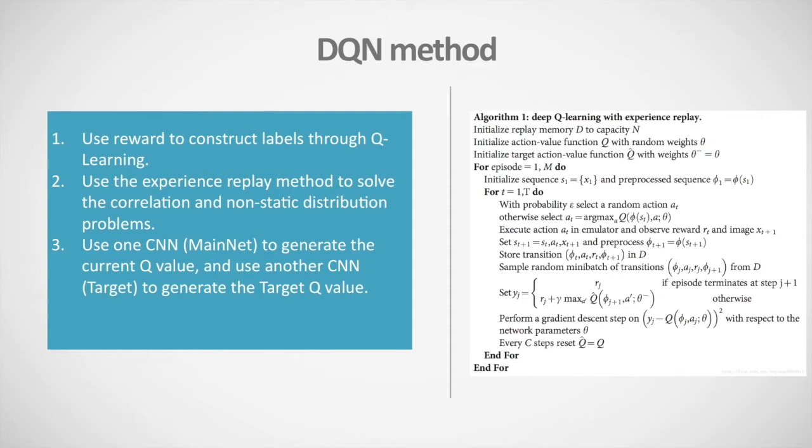The DQN method solves these problems in three ways. First, it uses reward to construct labels through Q-learning. Second, it uses the experience replay method to solve the correlation and non-stationary distribution problems. Third, it uses one CNN to generate the current Q-values and another CNN to generate the target Q-values.